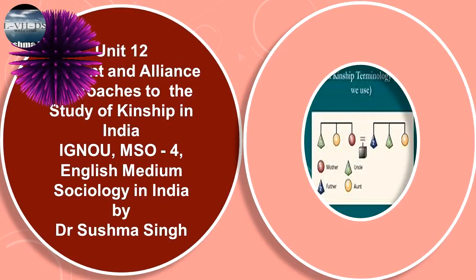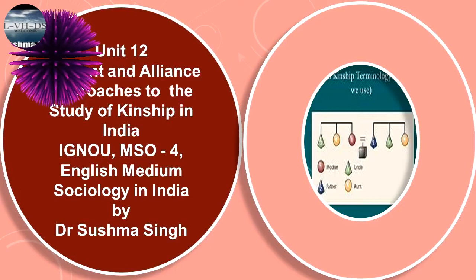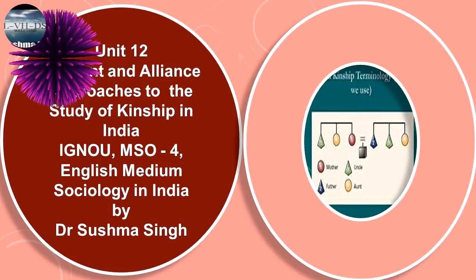Now let us conclude the unit. We have focused on four major aspects of kinship structures to discuss the application of the descent and alliance approach for understanding kinship patterns found in north and south India. The four aspects refer to: kinship groups, kinship terminology, marriage rules, and ceremonial exchange of gifts among kin. We have come to the end of the unit. Thanks for listening.